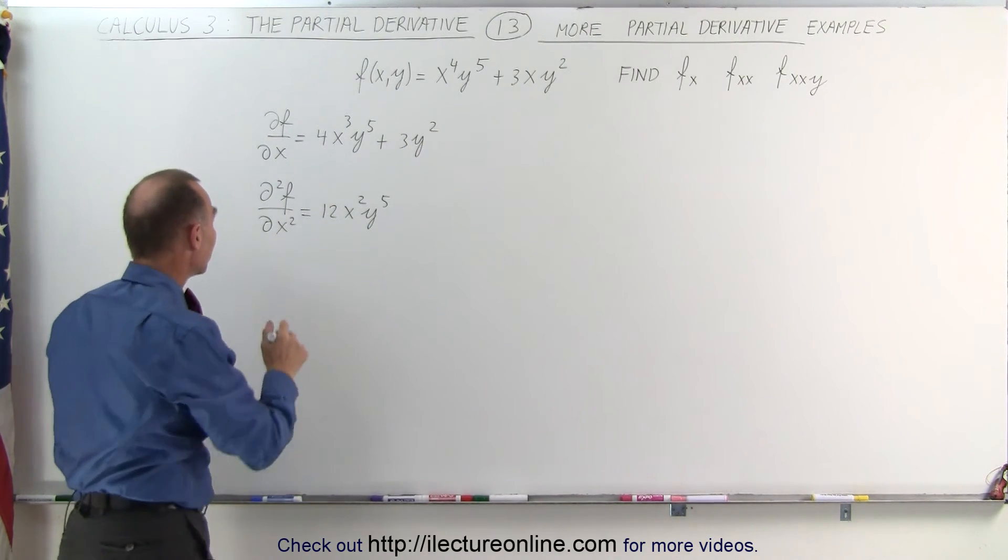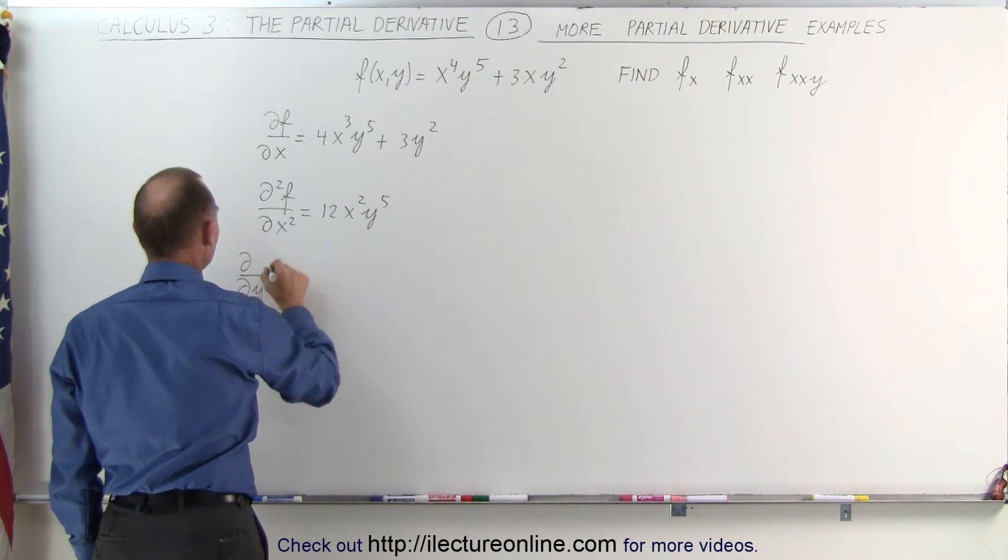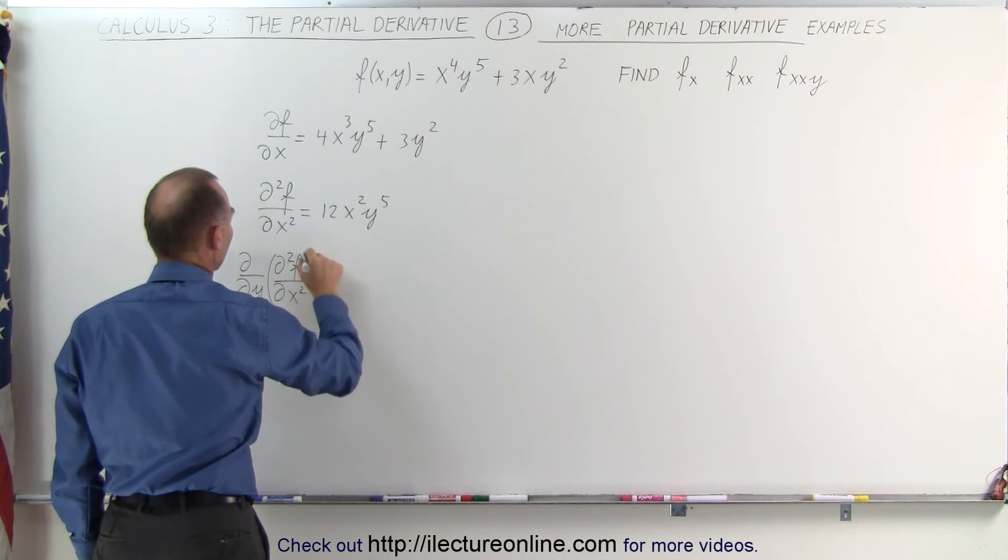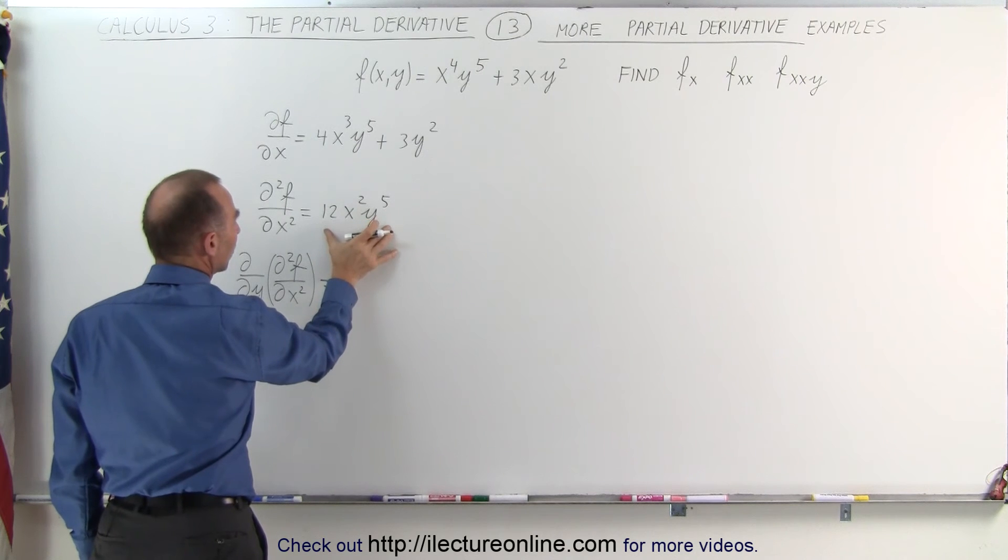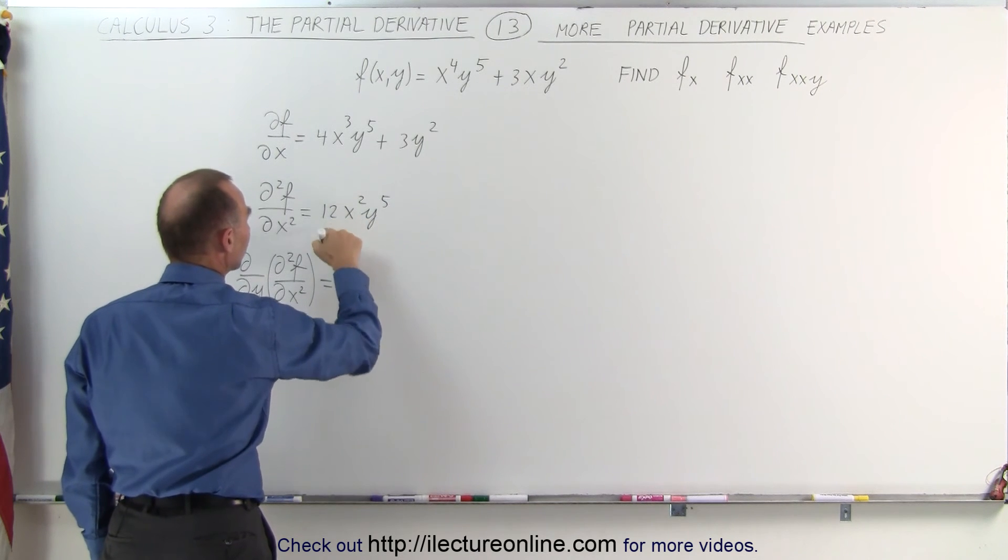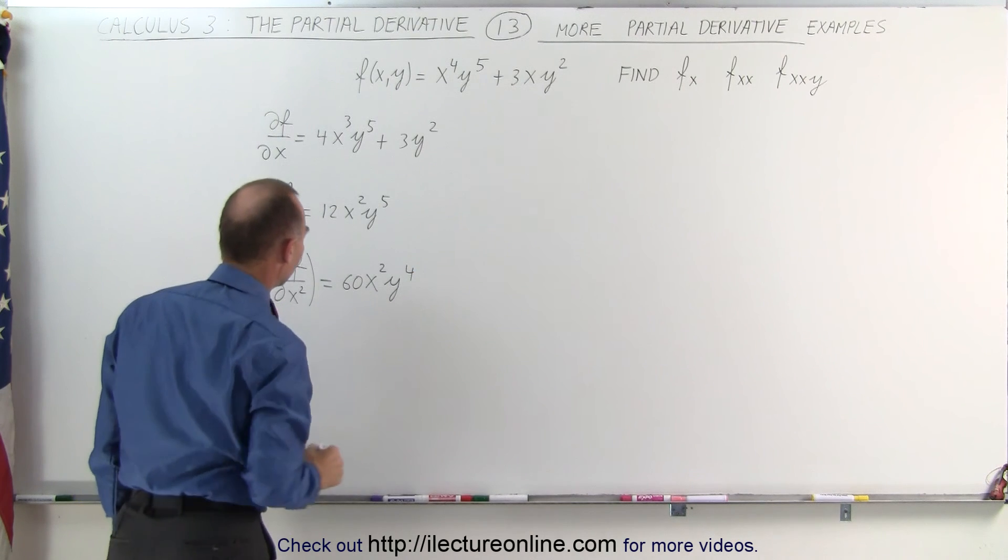And finally, we're going to take the partial derivative with respect to y of the second partial derivative of the function with respect to x. Which means we're going to take the partial derivative of this with respect to y. That means x will now become a constant. This is now 5 times 12, which is 60, x²y⁴.